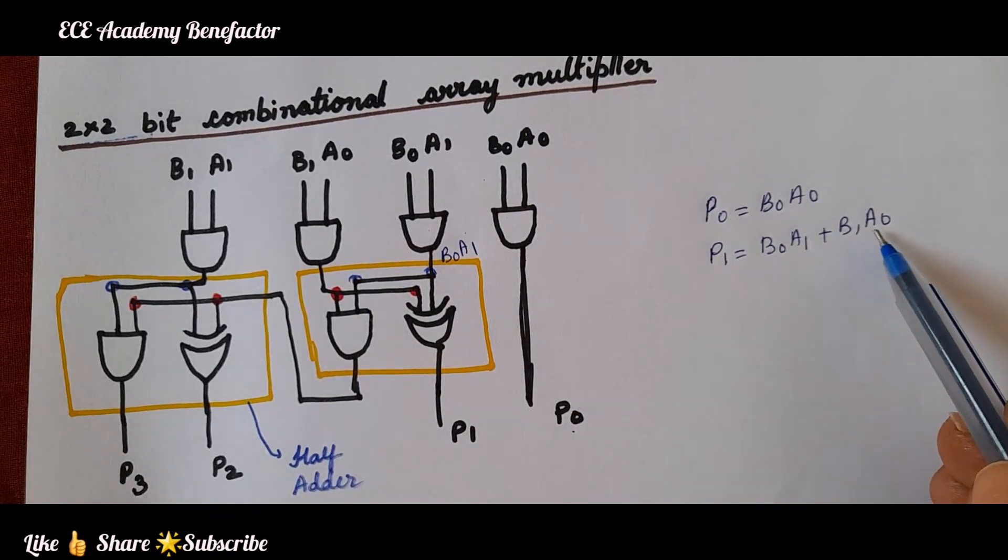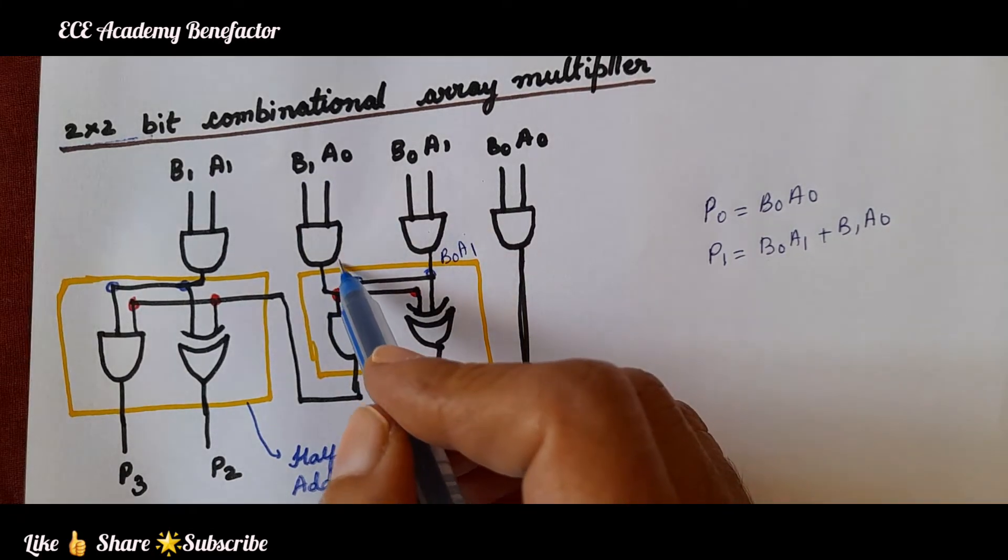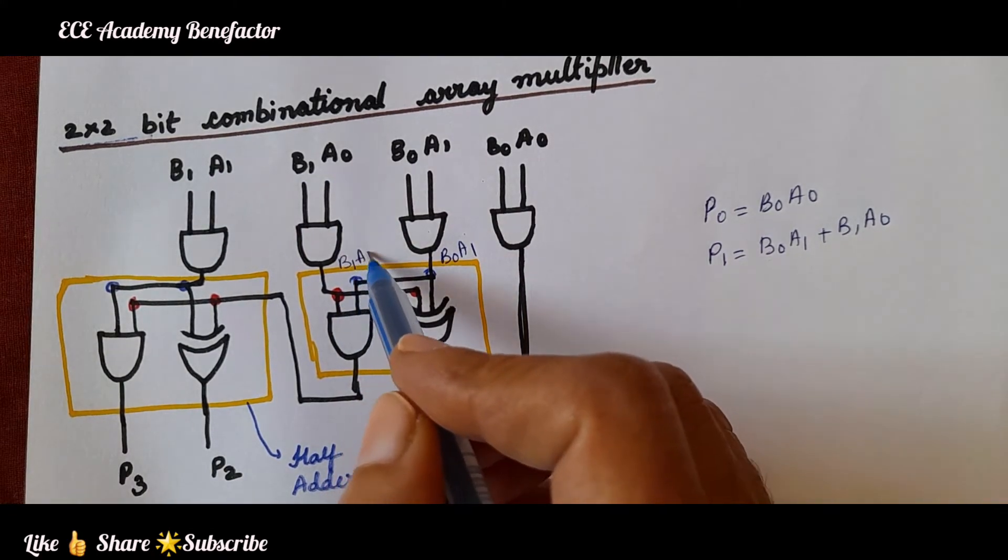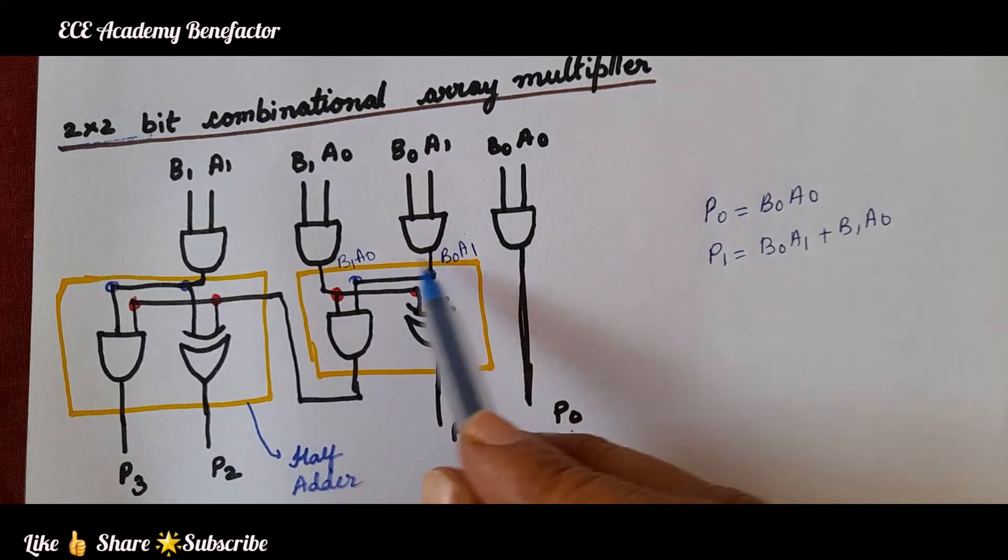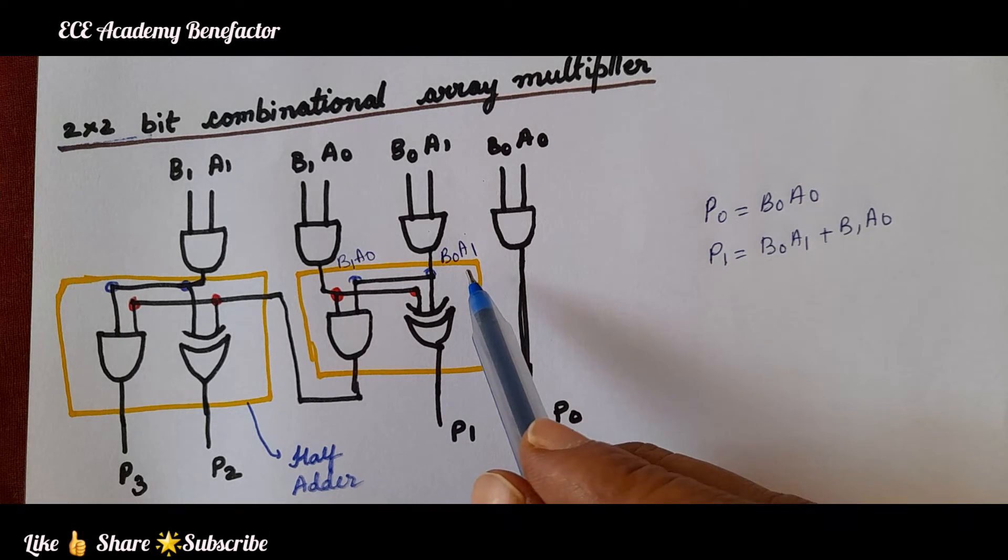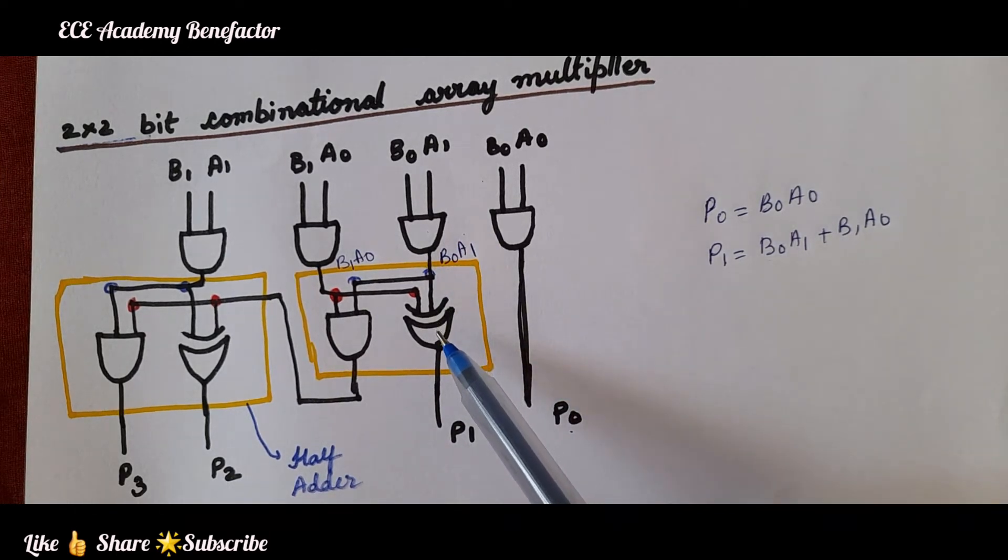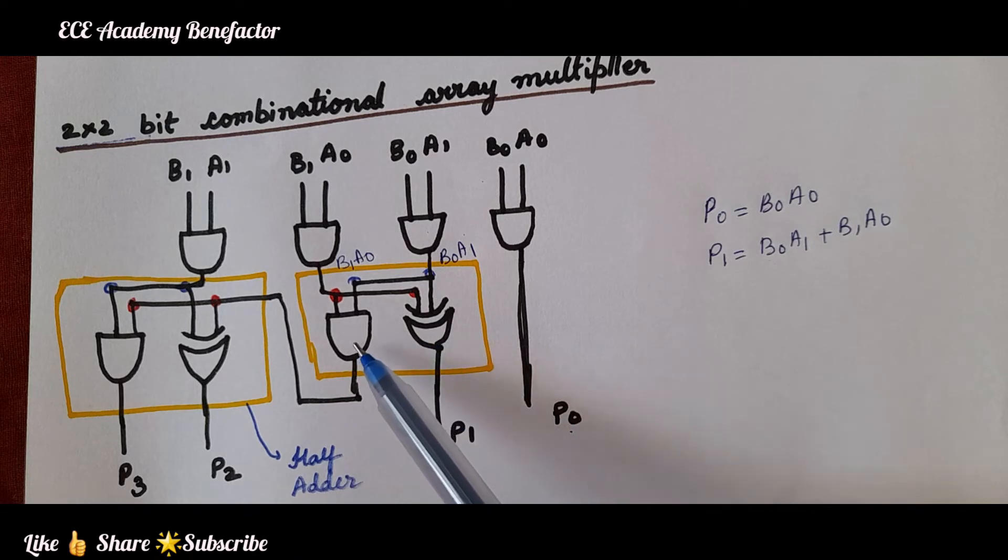The next term is b1a0. We will give b1a0 to AND gate to get the term b1a0. Now, these two numbers are added. How do we do that? We give them to a half adder. Half adder is comprising of an XOR gate and an AND gate.